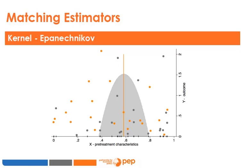The takeaway message is that the matching approach requires some compromise between the quality and the quantity of matches. The different estimators address the problem differently, but none of them are theoretically better than the others. A common practice is to measure the effect of a treatment using several estimators as a means of defending the robustness of the result.